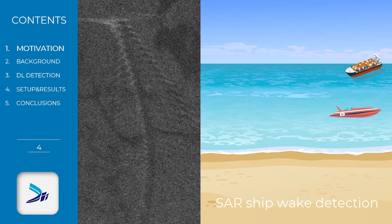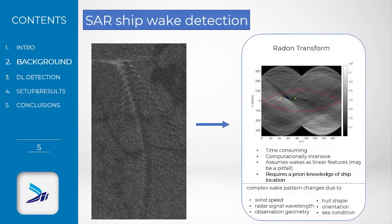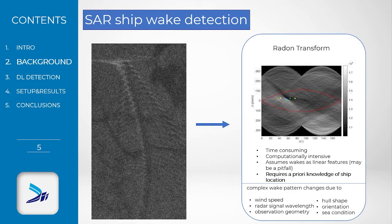Even when ships are not imaged, due to the coherent focusing mechanism of SAR, this methodology is called SAR ship wake detection, and it is traditionally approached with domain transforms such as Radon or Hough. However, these methods are time-consuming and computationally intensive. Most importantly, they assume wakes as a linear feature and require a priori knowledge of ship location.